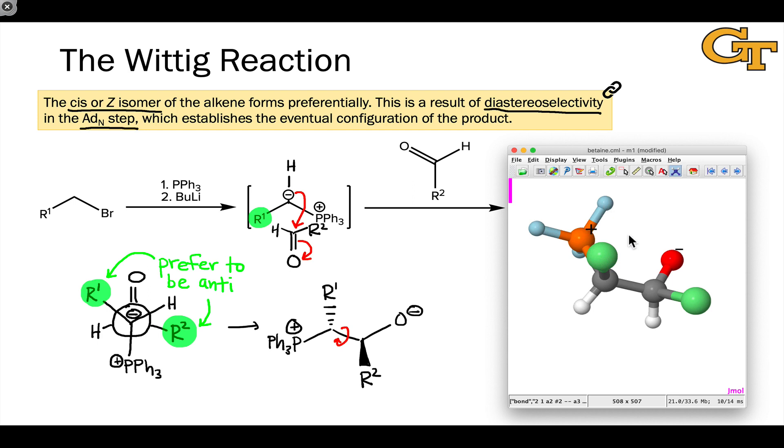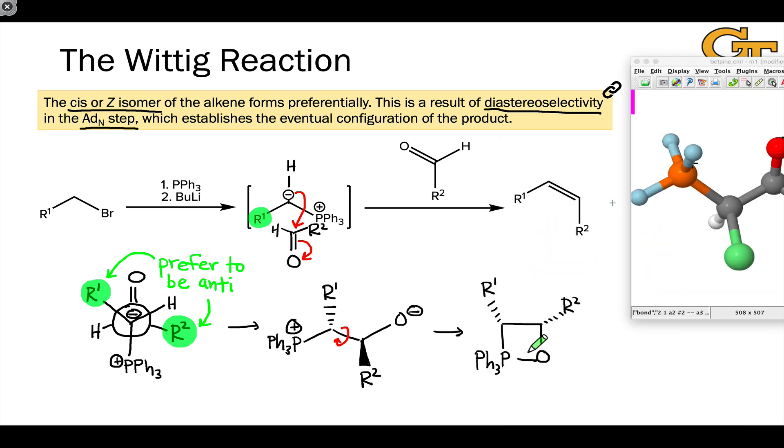Notice that after this 180 degree rotation, so that we've brought the oxygen and phosphorus relatively close to one another, the R groups are now relatively close to one another. They've moved into what look like cis or syn positions in this conformation of the intermediate. And here's a wedge-dash representation that shows this.